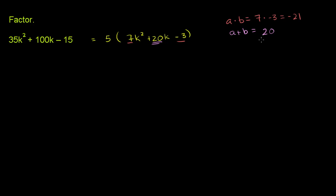And 1 will be the negative, because we want to get to a positive 20. So if we take 21 and negative 1, their product is negative 21.